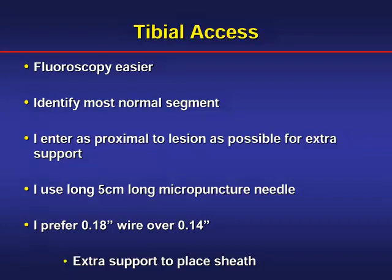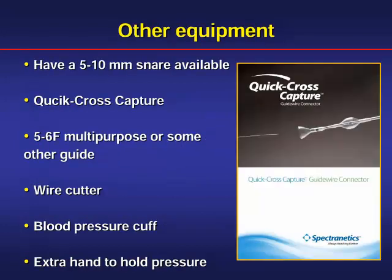For tibial access, I typically use a blood pressure cuff. After crossing the lesion, we put a cuff on the access site and inflate it to about 10 mmHg above systolic pressure for five minutes, while continuing work on the SFA and popliteal. The most important thing from a tibial access standpoint is that you check your access site at the end of the case and make sure there is no extravasation — you have to be 100% certain. I do not typically reverse my anticoagulation; I use a cuff.